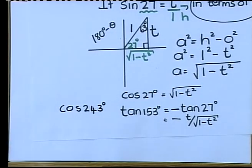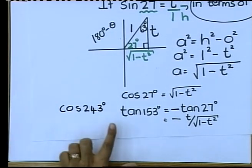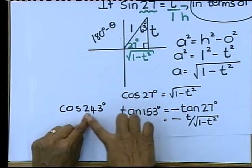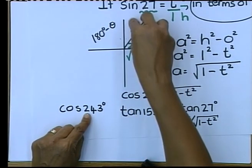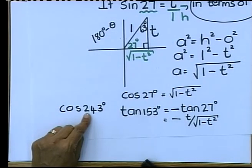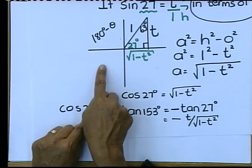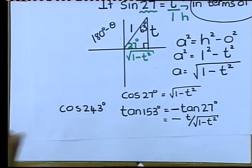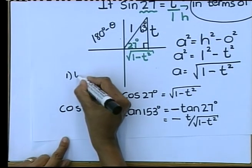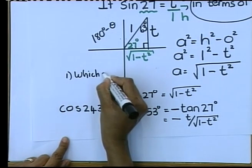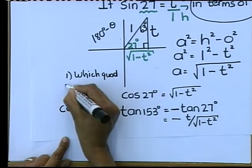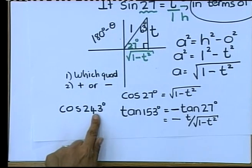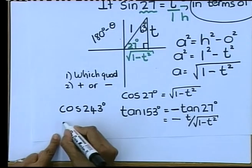Okay, what did I say in the previous question? Check which quadrant you are working in. 243 — 0 to 90, 90 to 180, 180 to 270 — yes, we are working in the third quadrant. So your first question is: which quadrant? Second question: is cos positive or negative in the third quadrant? I'm working in the third, cos is negative there.